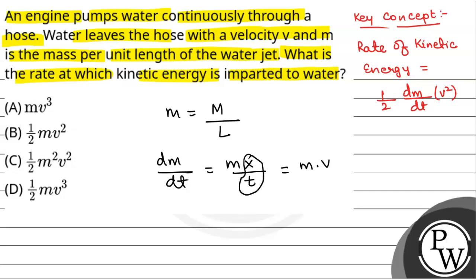So rate of kinetic energy that will be equal to half into dm by dt is m v into v squared. This will be the rate of kinetic energy imparted to the water.